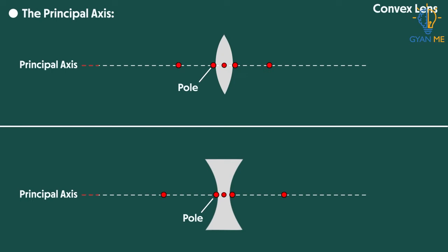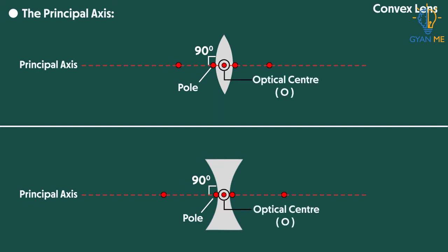Remember that this line is always perpendicular to the lens at its pole as well as its center like this. In other words, it is normal for a lens to be at its pole and optical center O.